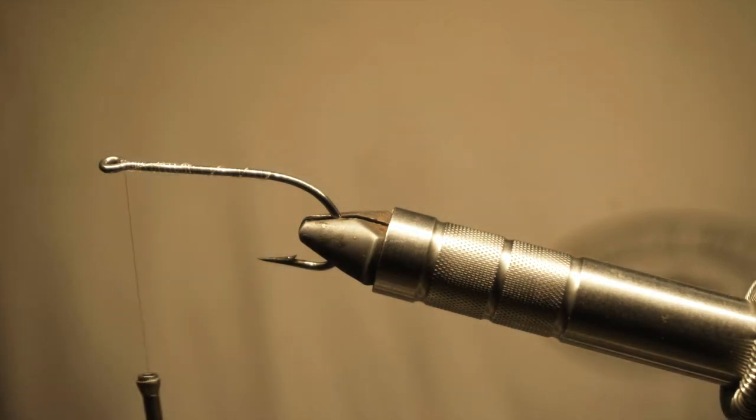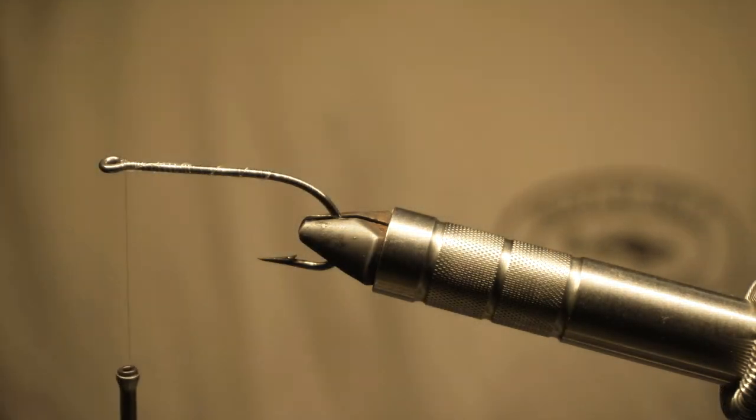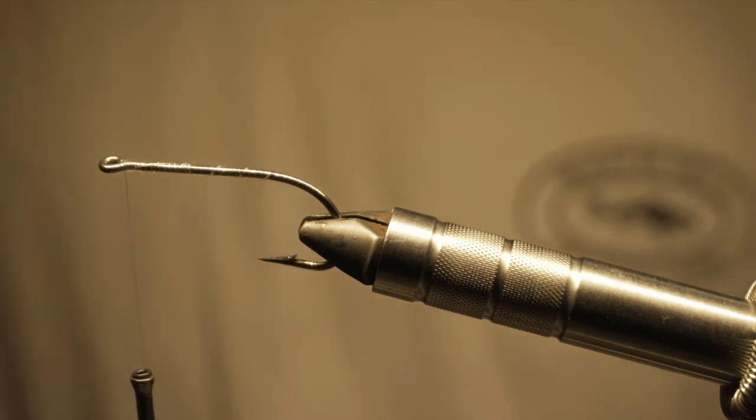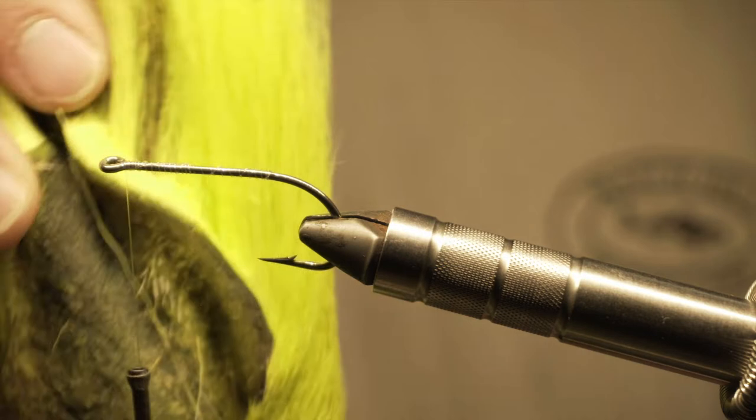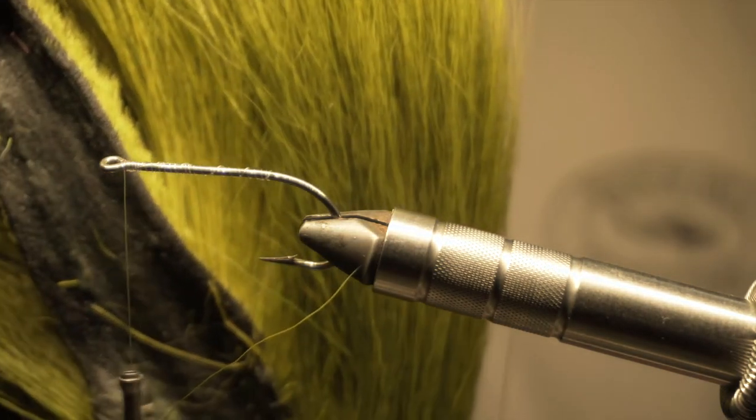We're going to be using four materials on this fly. First one is going to be this white bucktail. The second one is going to be this pearl crystal flash. Then we're going to use a chartreuse bucktail, and then finally an olive bucktail.